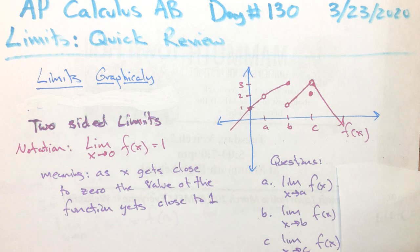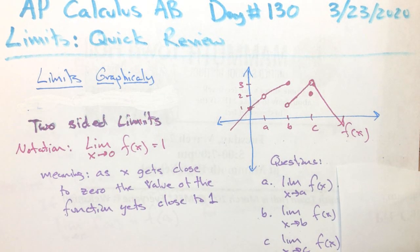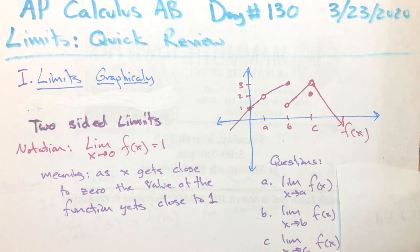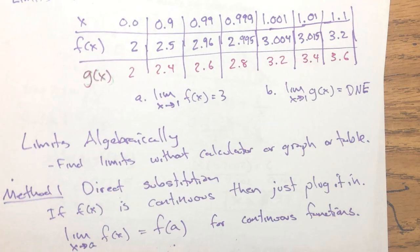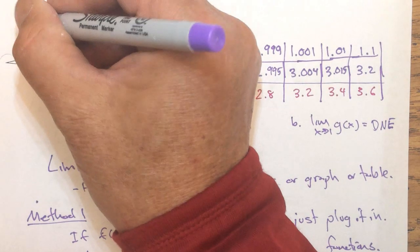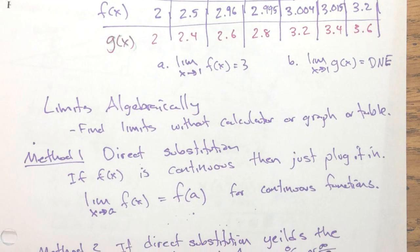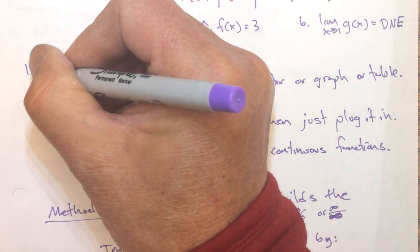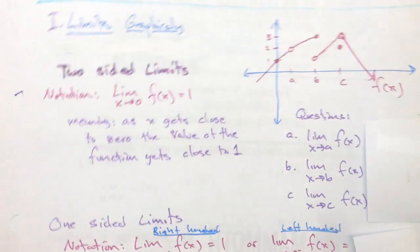Limits graphically. We're actually going to be doing several things. I'll just give you a preview. We're going to do limits graphically on the first page. Then we're going to look at limits from a table. And then three, limits algebraically. So that's basically what we're going to go through.